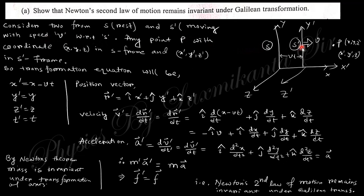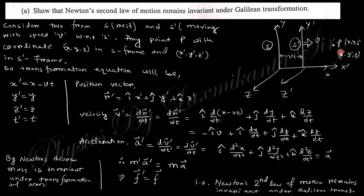Consider two frames: the S frame and the S-prime frame, which is moving with velocity v with respect to the rest frame. Any point P has coordinates (x, y, z) in the S frame and coordinates (x', y', z') in the S-prime frame. The Galilean transformation equations state: x' = x − vt, and y', z', t' are equal to y, z, t respectively.